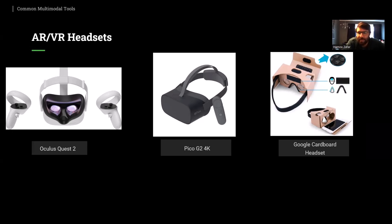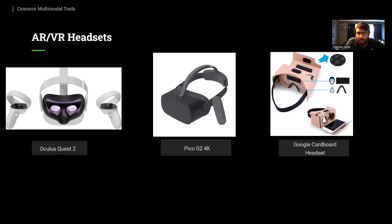These headsets basically provide students with an immersive and interactive learning experience by allowing them to explore and interact with virtual environments. We will discuss the different types of headsets available, ranging from simple cardboard on the right side to high-end headsets with advanced tracking and haptic capabilities on the left side, such as the Oculus Quest. We will also explore how each headset can be used in different educational settings, from science and engineering to history and the arts.